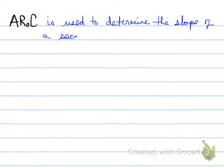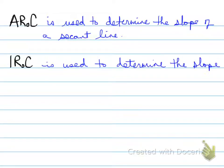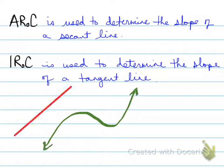Average rate of change is used to determine the slope of a secant line. Now a secant line is different from a tangent line. The instantaneous rate of change is used to determine the slope of a tangent line. Now let's look at some examples and attach some definitions with this.